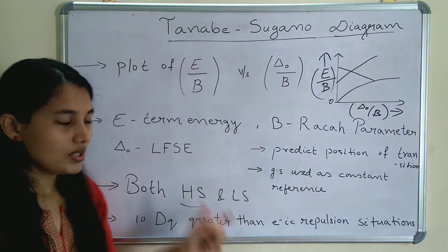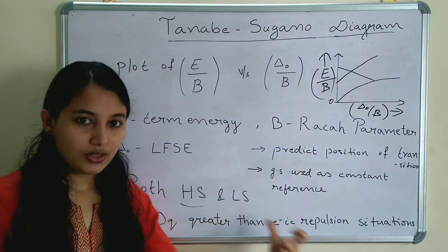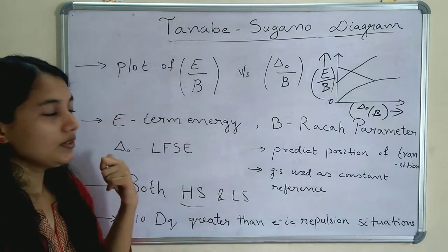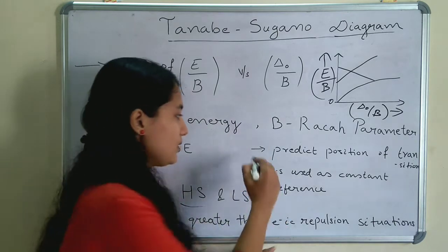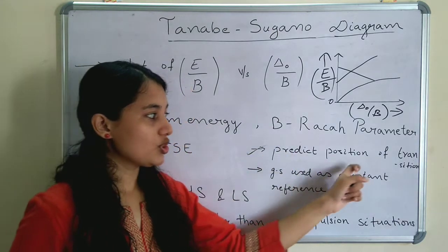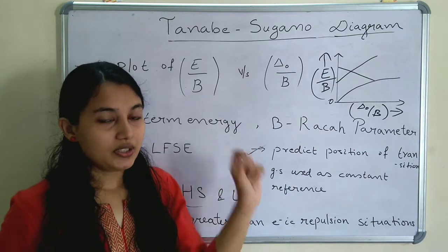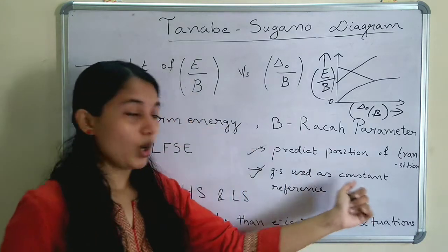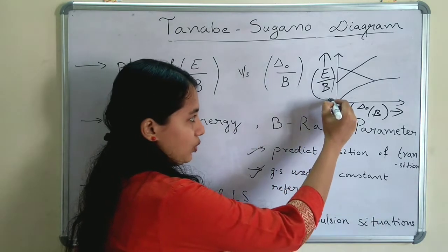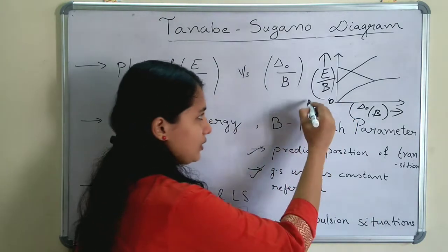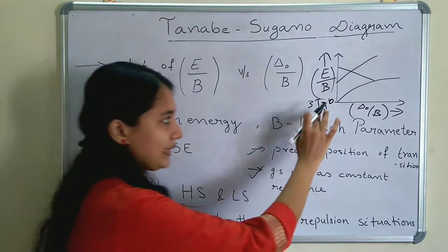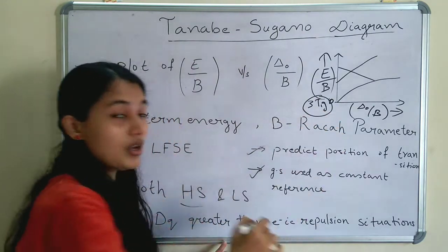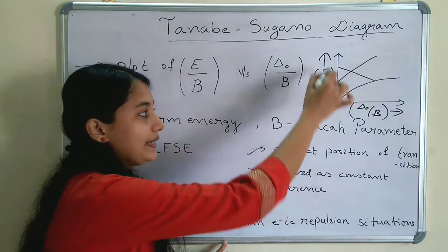Another benefit of the TS diagram is that it can predict the position of transitions. The ground state is used as a constant reference — taken as zero. For example, for a D2 complex the ground state 3T1G is taken as the constant reference for the TS diagram.